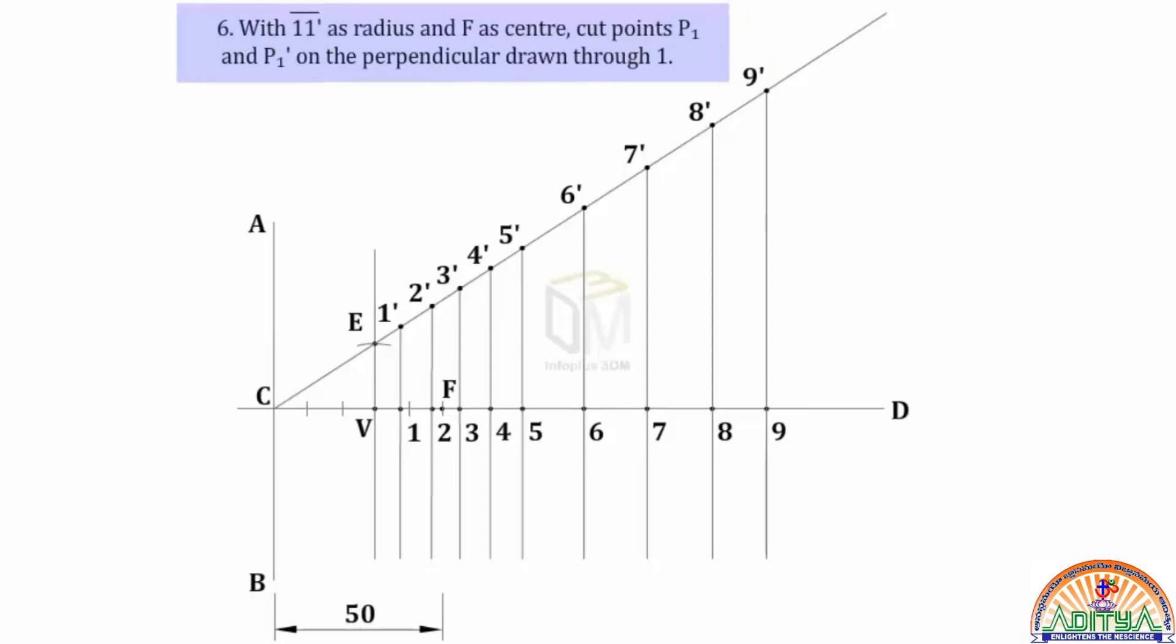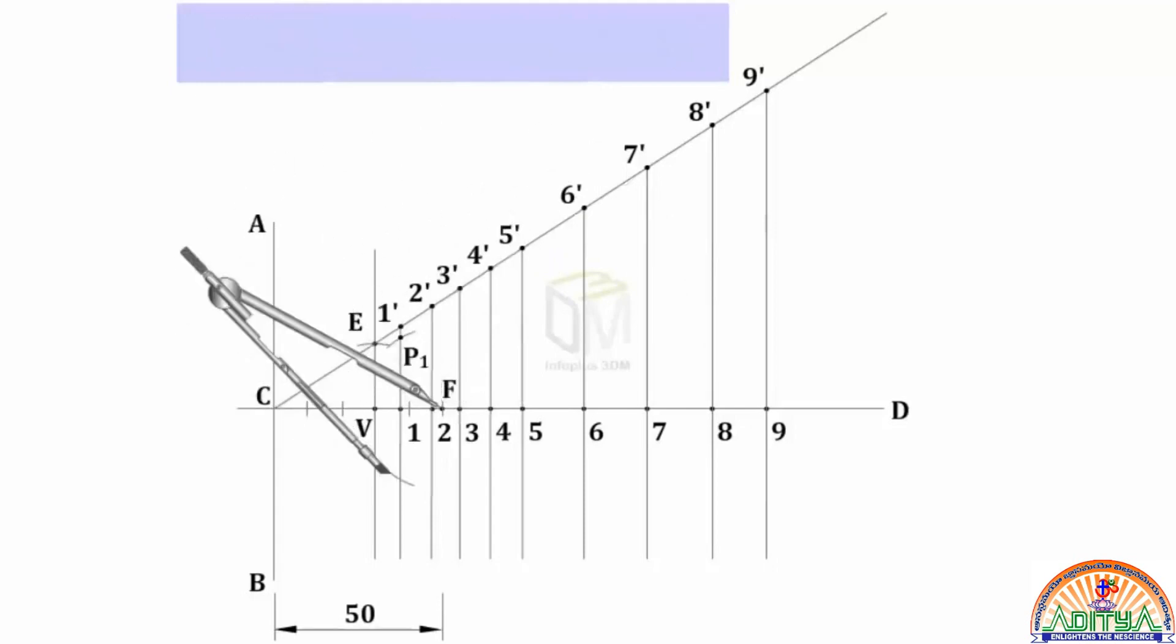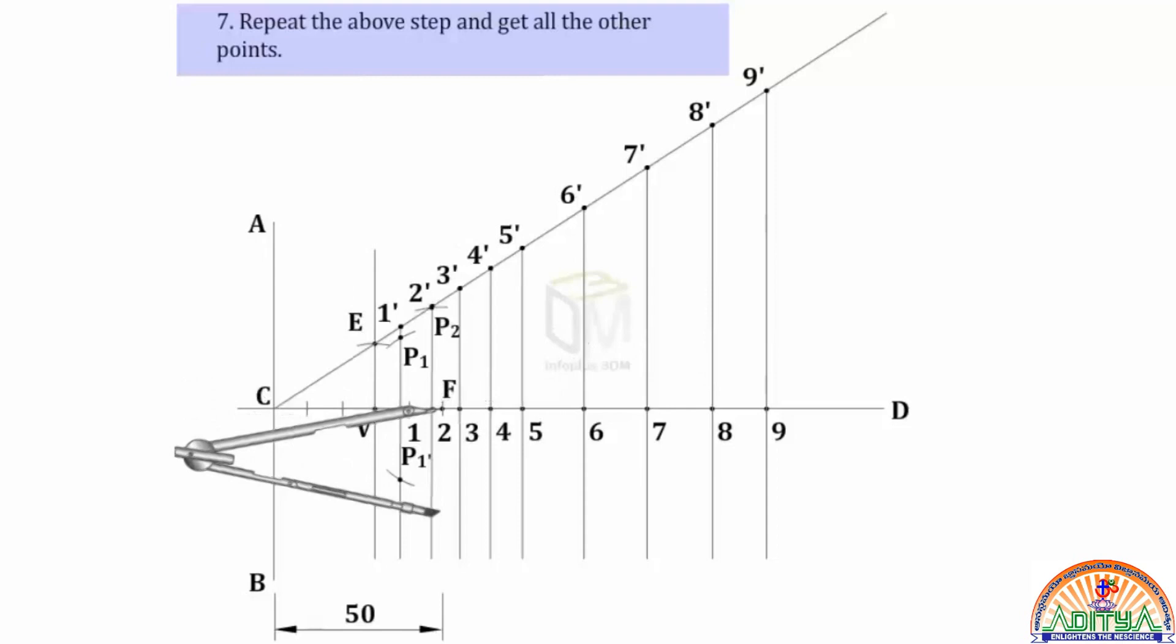Now with 1, 1 dash as radius and F as center, cut the points P1 and P1 dash on the perpendicular line drawn through 1. Repeat the above steps and get all the other points.